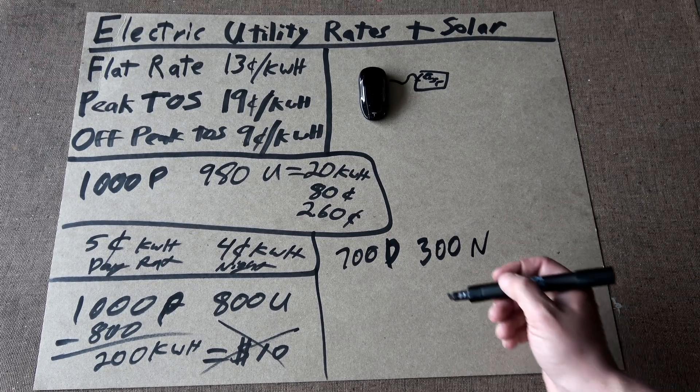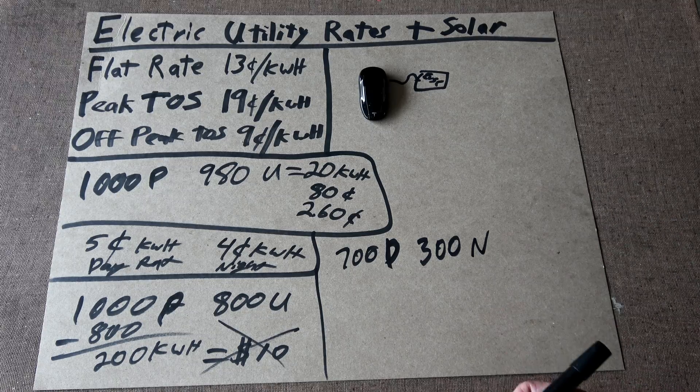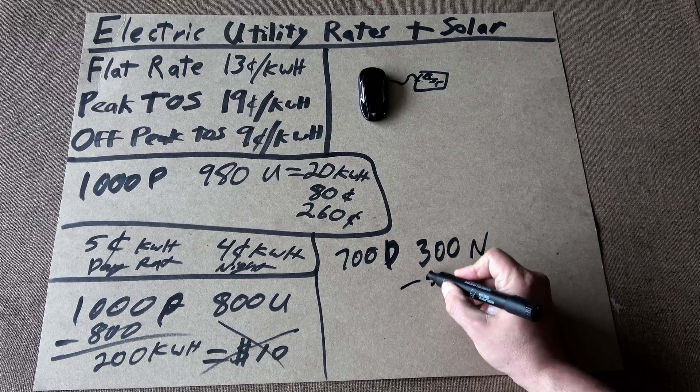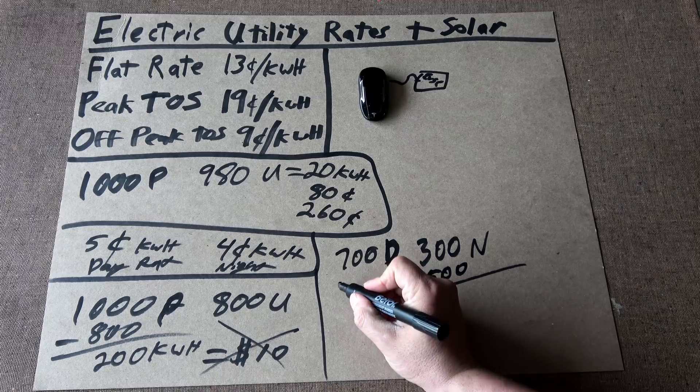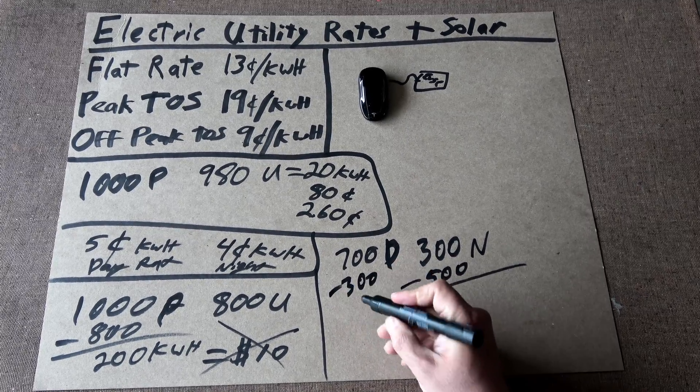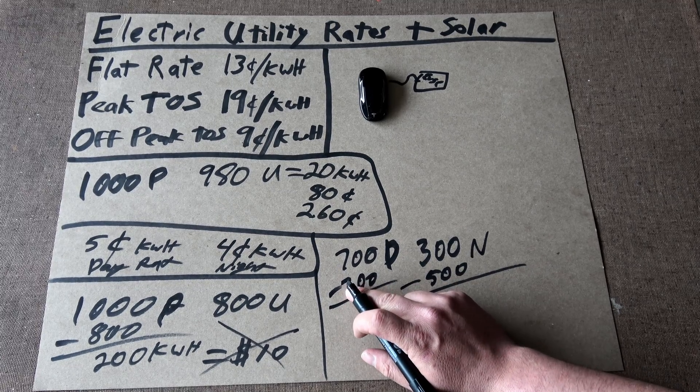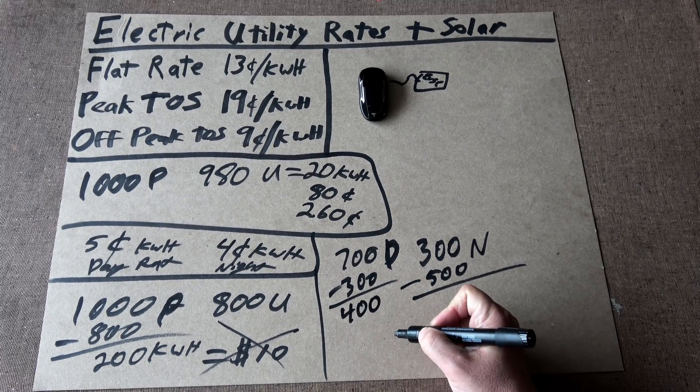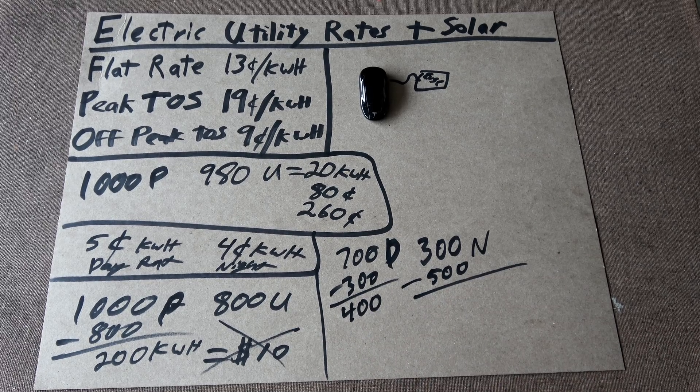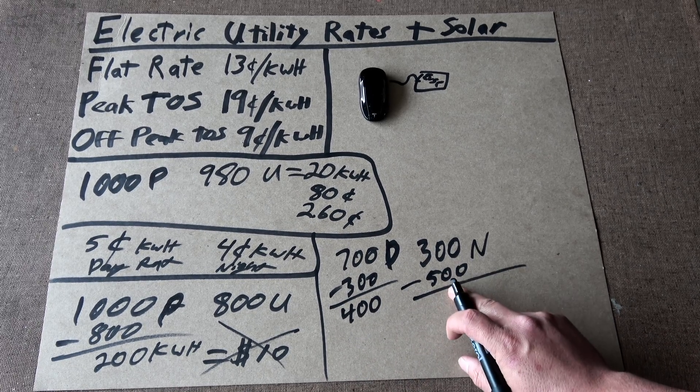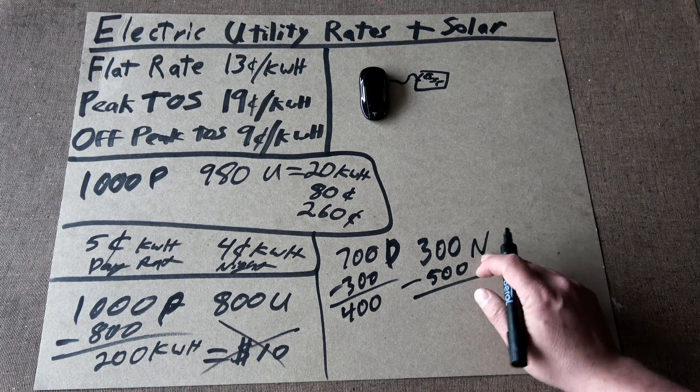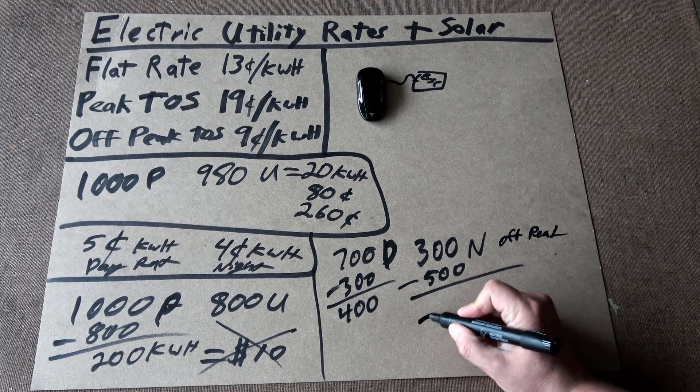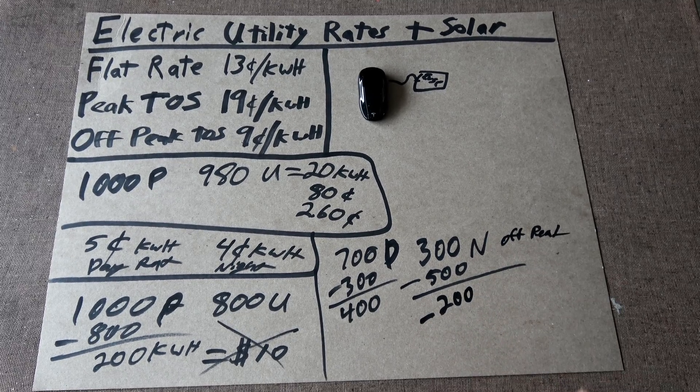Out of that 800 that I used, I used, say, 500 at night and I used 300 during the day. That means I had overproduction of 400 kilowatt hour during the daytime. But I had a negative production for night or off-peak. I had a negative balance of kilowatts of 200 at night.